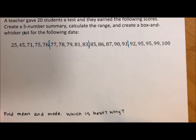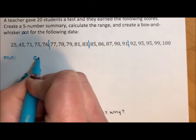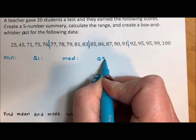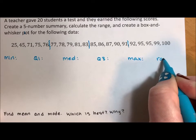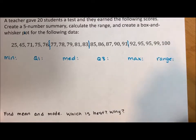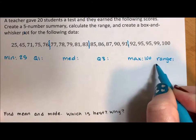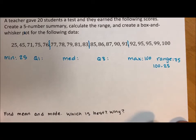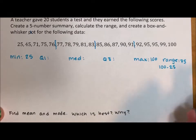If this is my first video, you don't know what I'm doing. The five-number summary is the minimum, the first quartile, the median, the third quartile, the maximum, and then the range is not part of the five-number summary, but I like calculating the range.